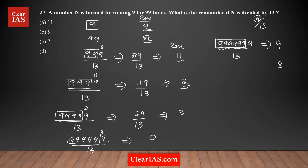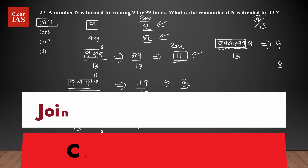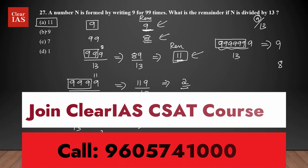In the question, we have 99 nines. The closest multiple of 6 is 96, so for 96 nines the remainder is 0. Then: 97 nines → remainder 9, 98 nines → remainder 8, 99 nines → remainder 11. The answer is 11. If you can identify the pattern, you can get to the answer easily — otherwise, this is a question you might choose to skip.